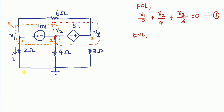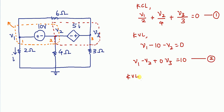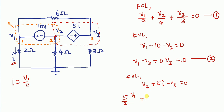Now applying KVL for the first loop: rise in voltage V1, then drop 10 volts, then drop V2, giving the second equation: V1 − V2 = 10. Applying KVL for the second loop: rise in voltage V2, then drop V3, and since I = V1/2, the dependent source gives 5·(V1/2). So the third equation is 5·V1/2 + V2 − V3 = 0.